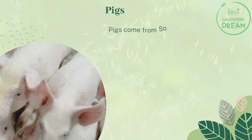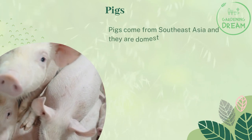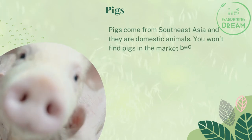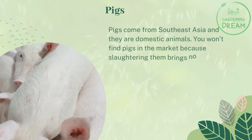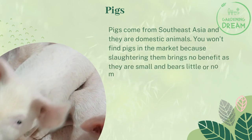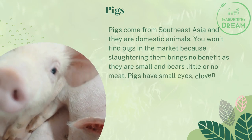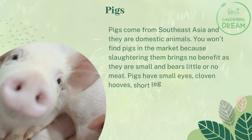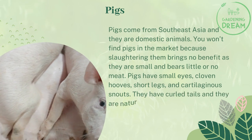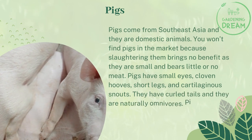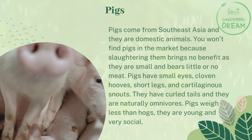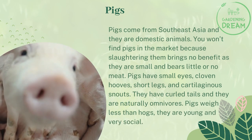Pigs come from Southeast Asia and they are domestic animals. You won't find pigs in the market because slaughtering them brings little benefit, as they are small and bear little or no meat. Pigs have small eyes, cloven hooves, short legs, and cartilaginous snouts. They have curled tails and are naturally omnivores, weighing less than hogs.